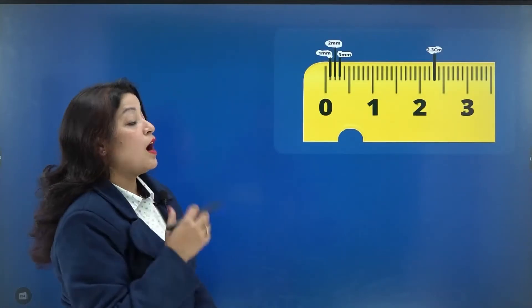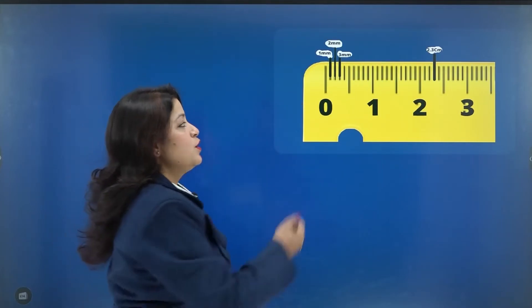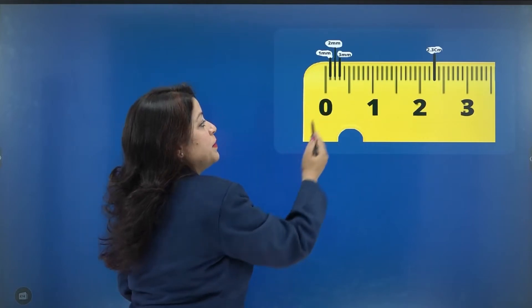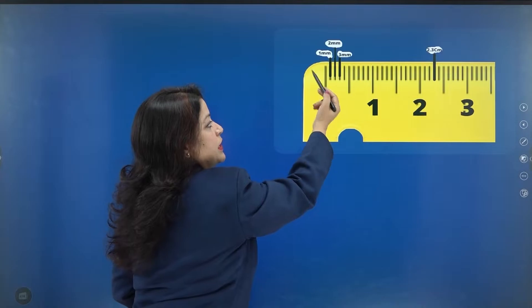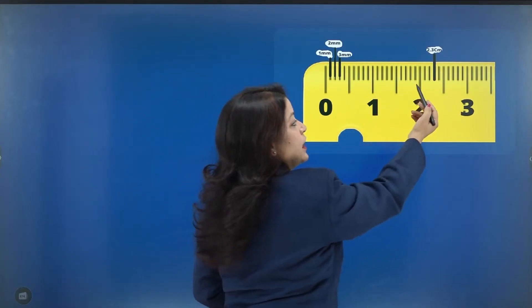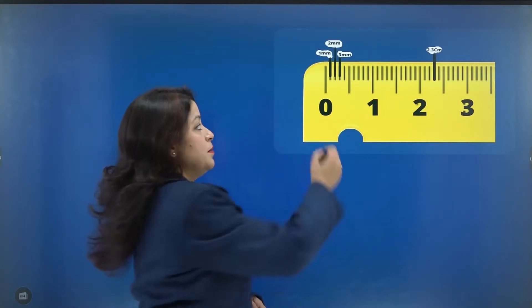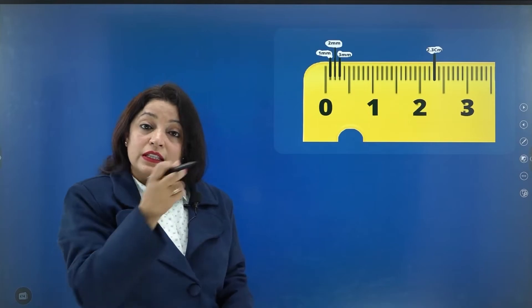How do we find specific millimeter positions? The first division from 0 gives you 1 millimeter, the second gives 2 millimeters, the third gives 3 millimeters. If I want to find 2.3 on the ruler — after 2 centimeters I add 0.3, and 0.3 means 3 millimeters expressed in centimeters. So this represents 2.3 centimeters.